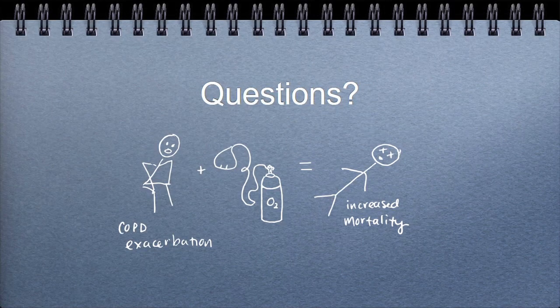Question from the audience: Is there a target for PaO2 rather than O2 saturation, since sats can be variable? Response: I think it correlates pretty similarly — 88 to 92% for the oxyhemoglobin on the ABG. So I'd look at the ABG rather than the O2 sat.